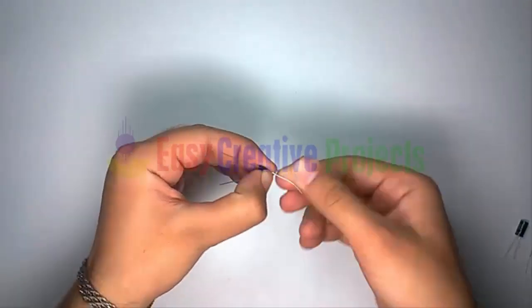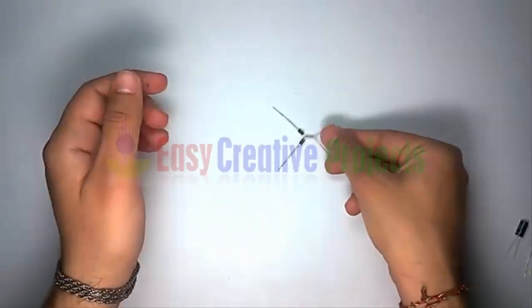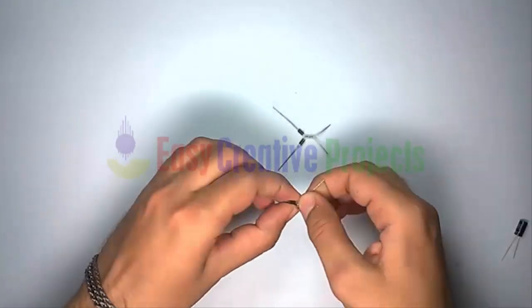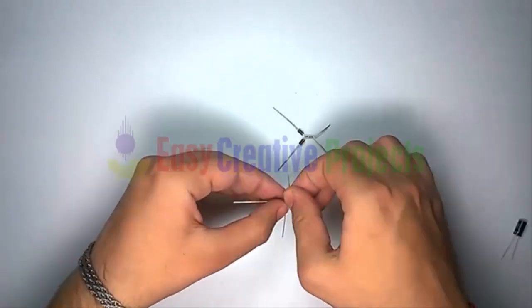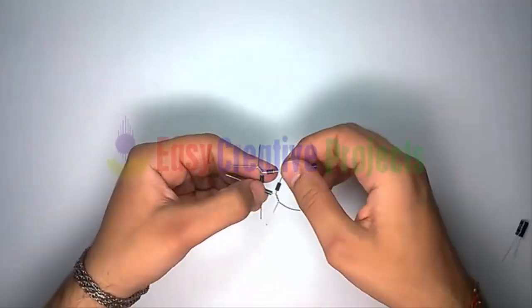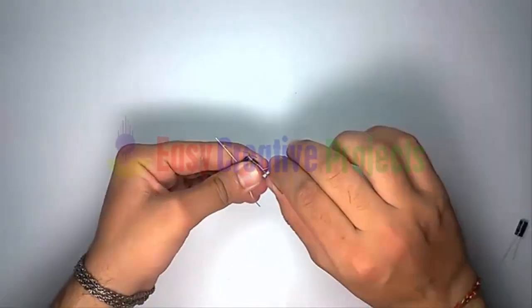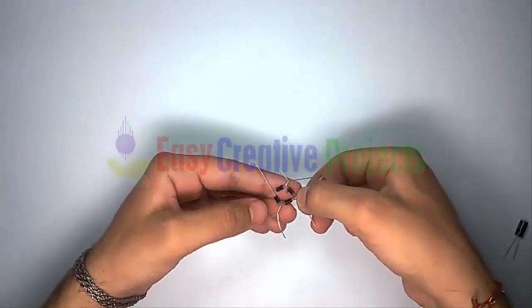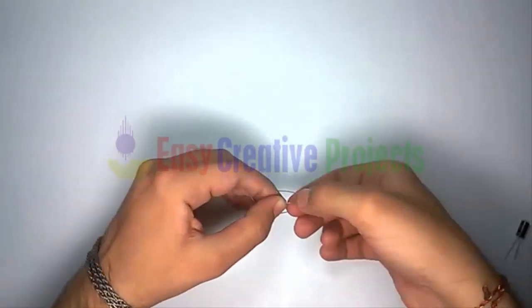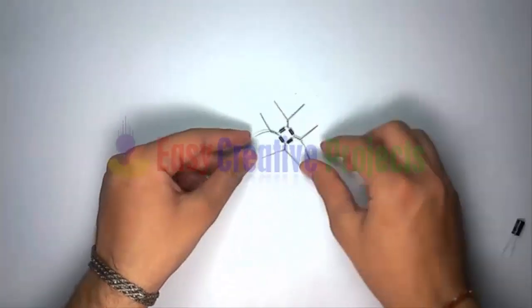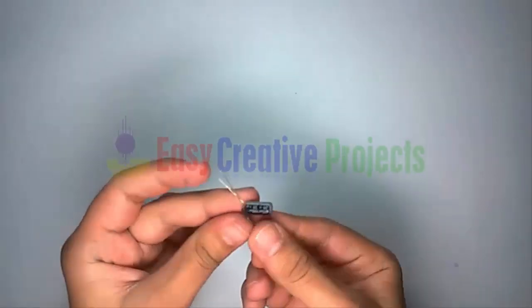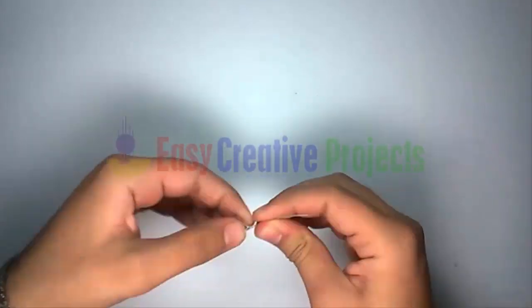Connect 4 diodes in a square like this. Now connect the 100uF capacitor with the diode like this.